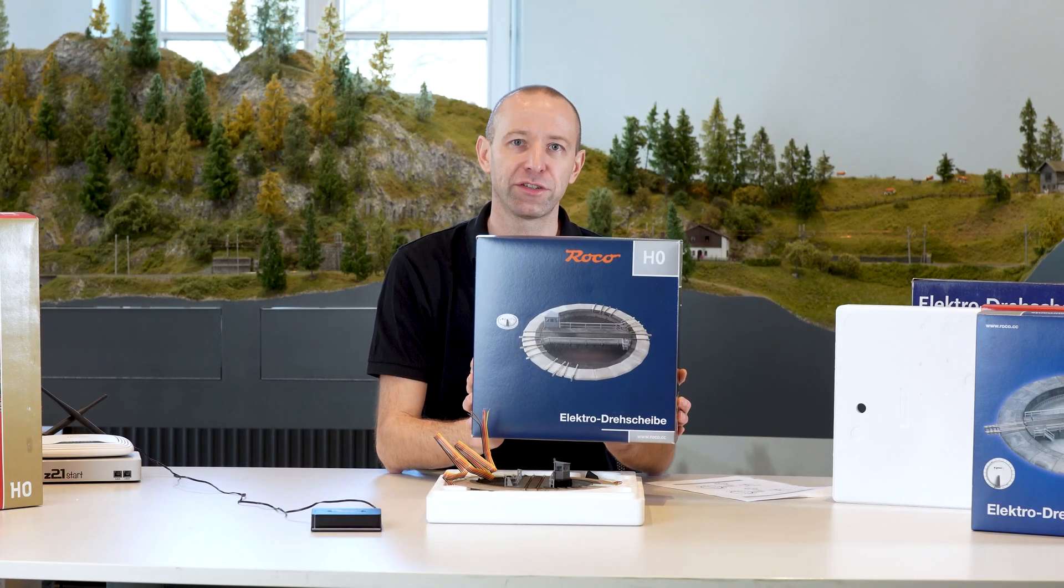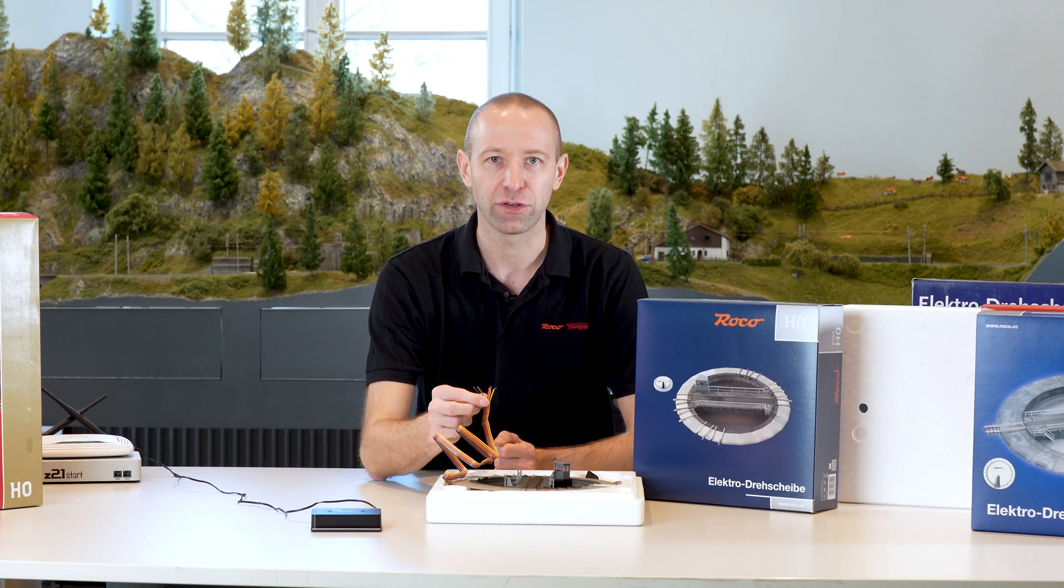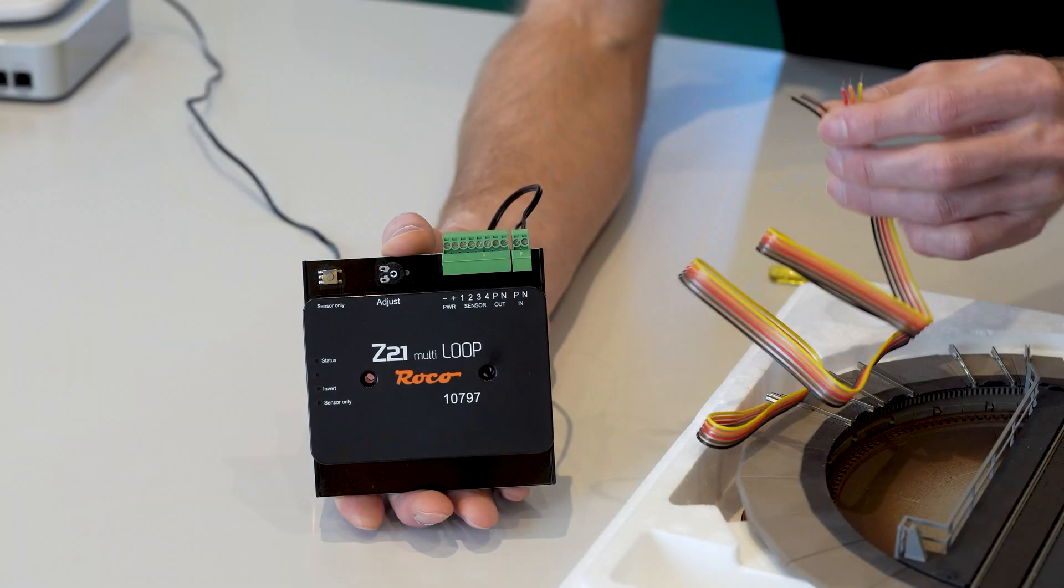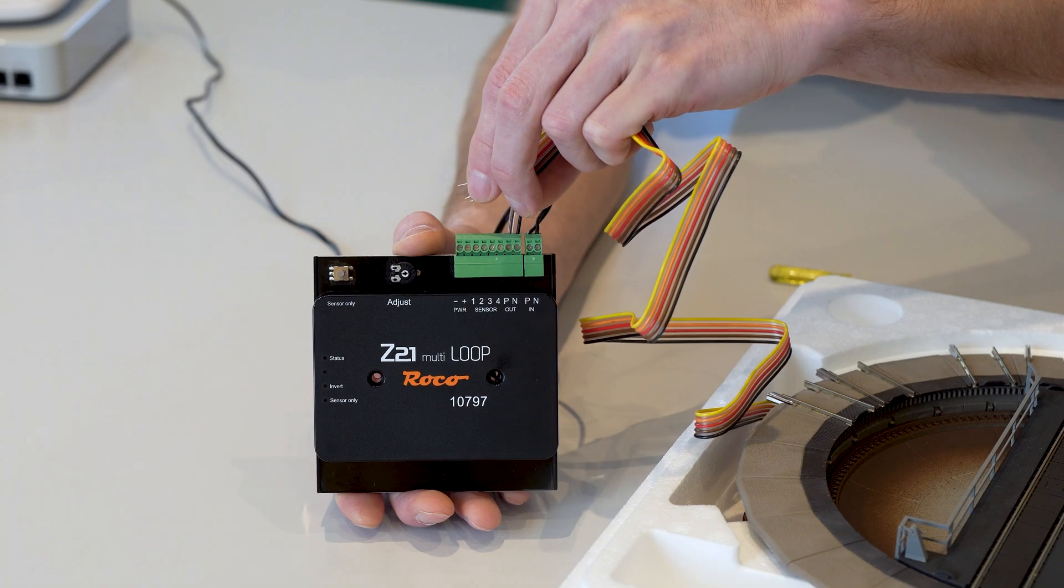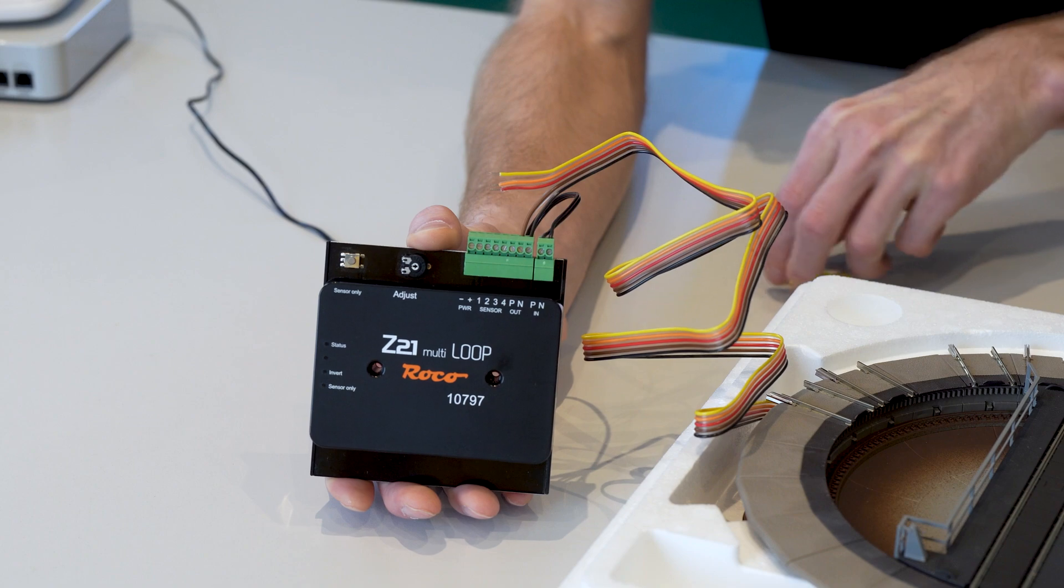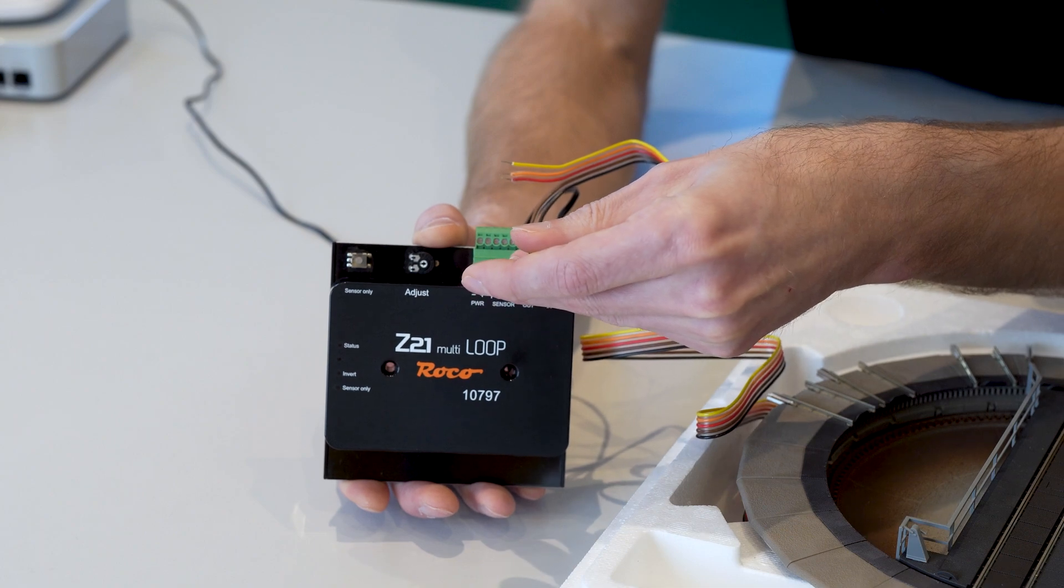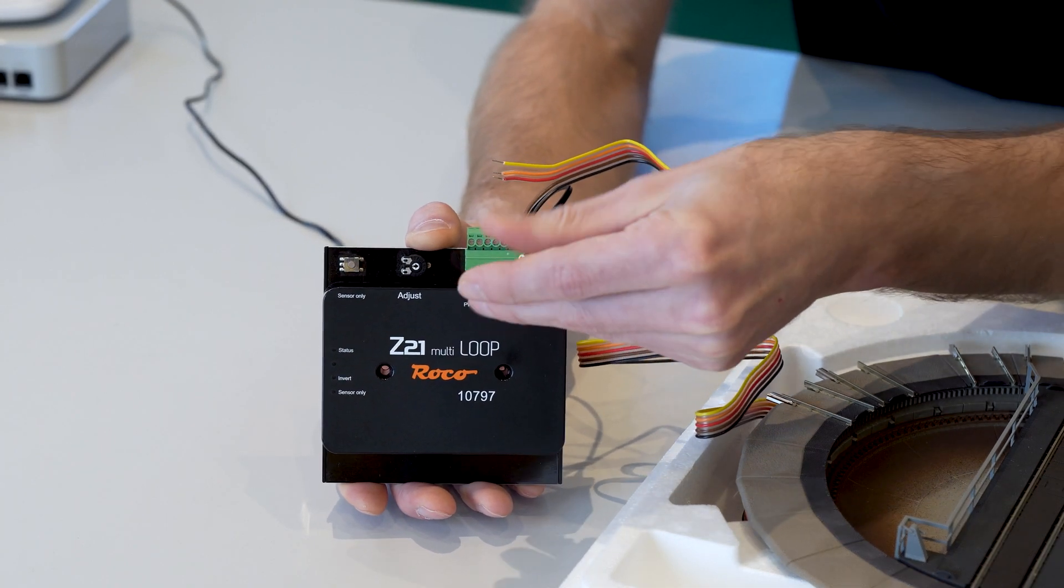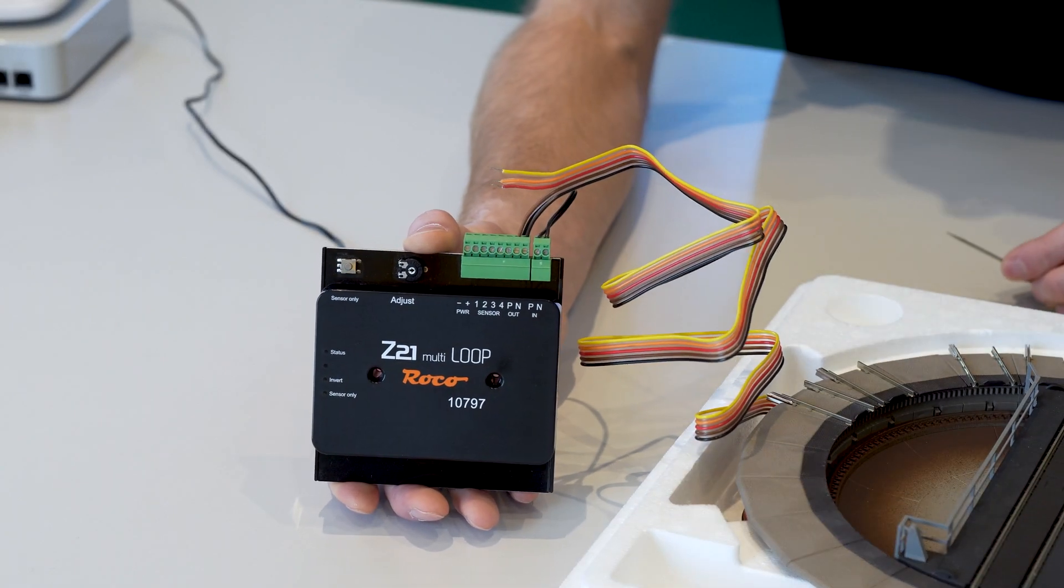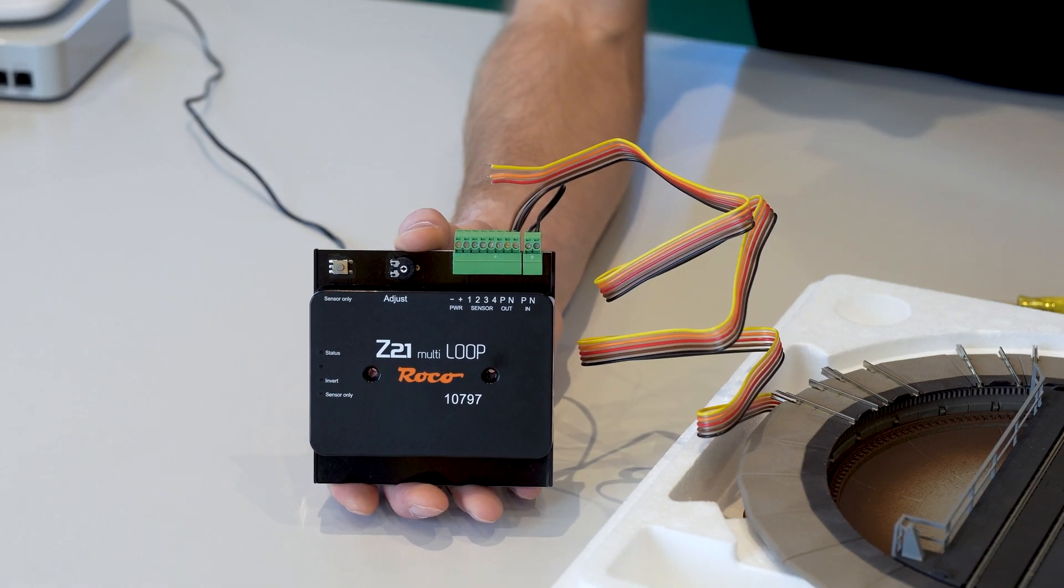With the new Roco turntable, the 6154, the cable colors are a bit different. You need the brown and the black cable here. These are the two cables for the platform power supply. We take the brown and black cables and connect them to the two inputs. Screw them tight one time. The turntable is now ready for digital operation and the other three cables are connected back to the handheld controller.